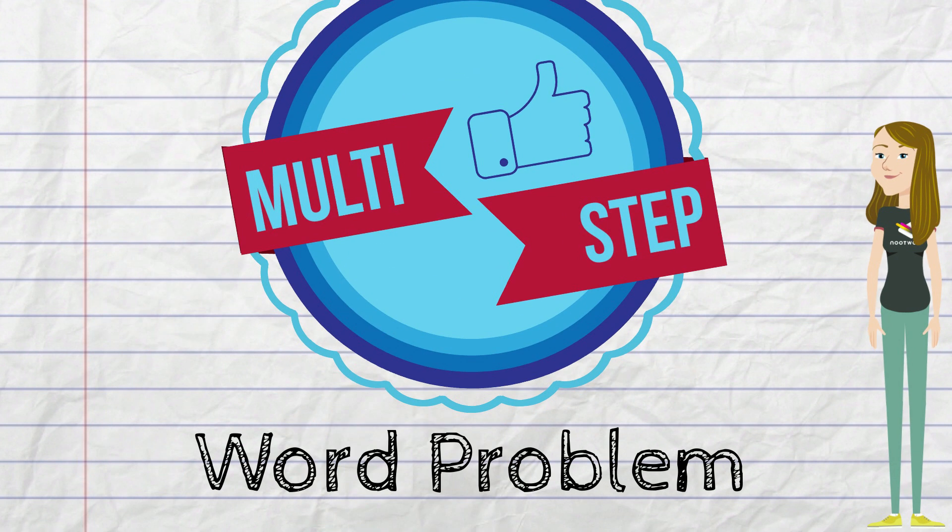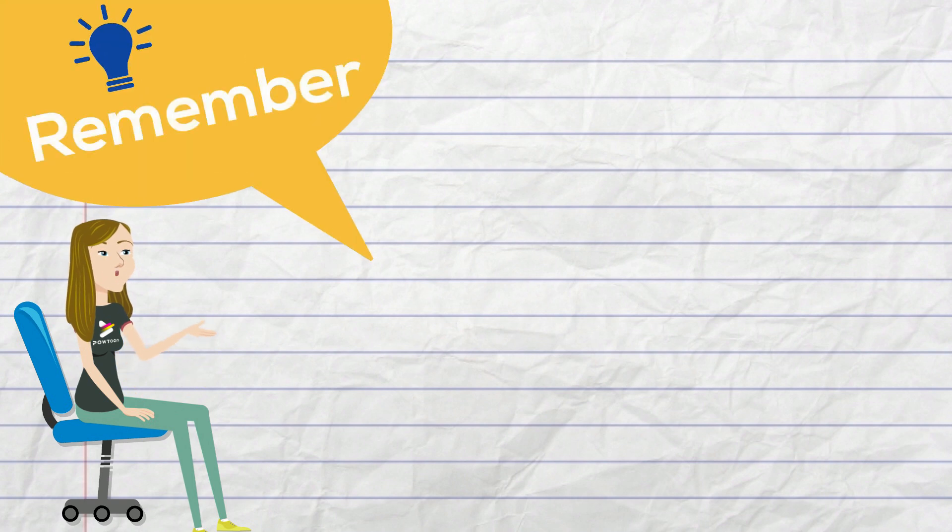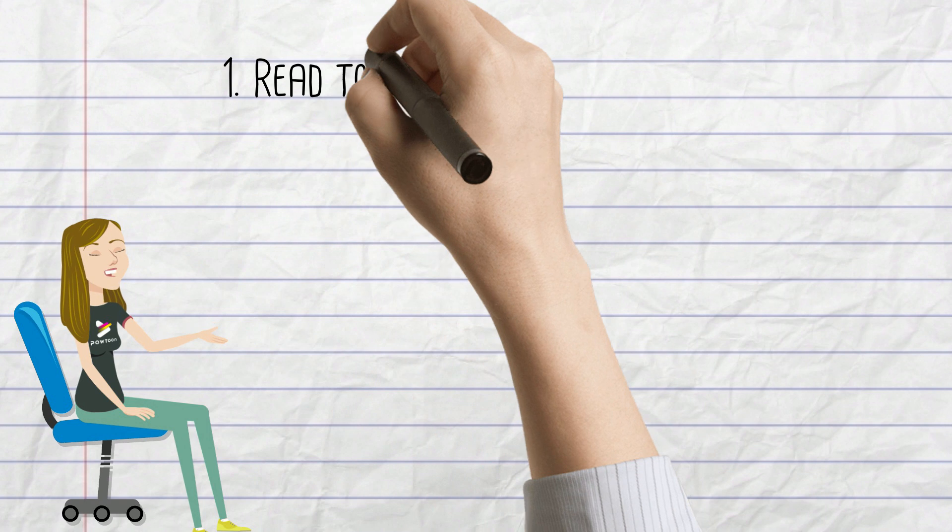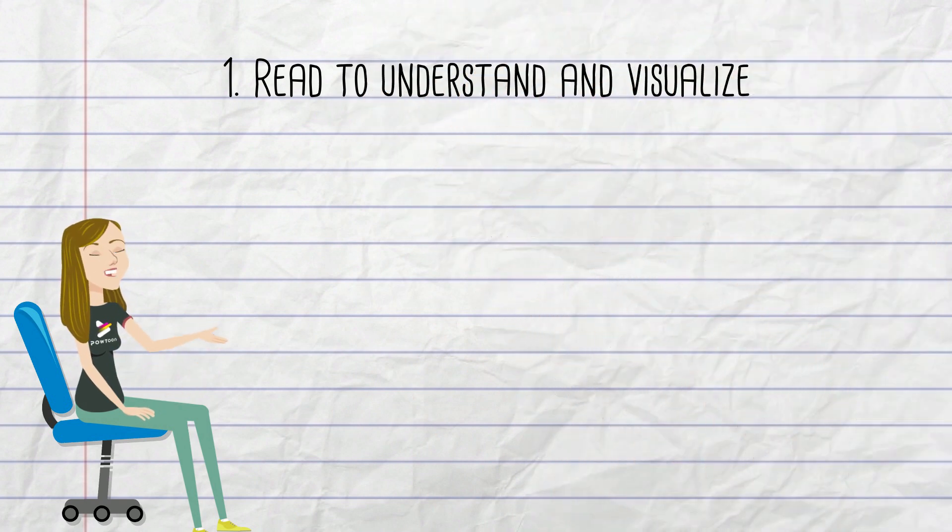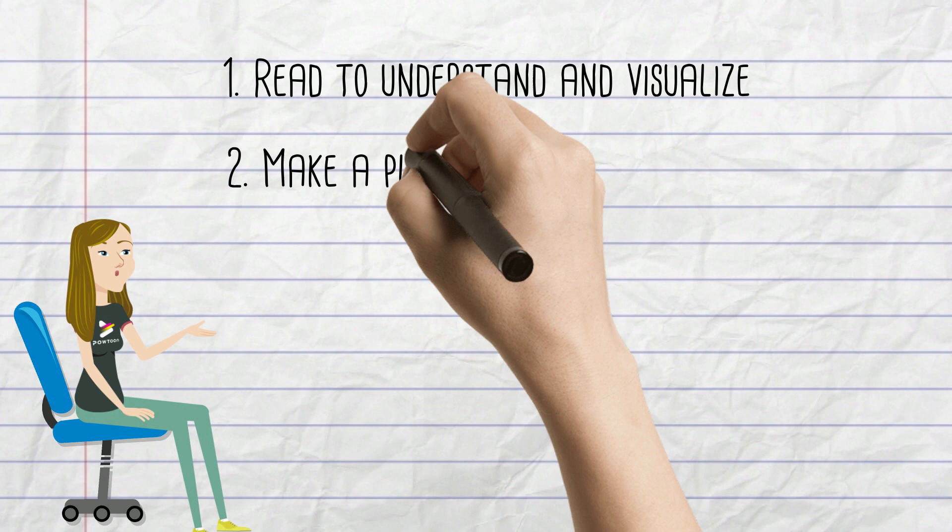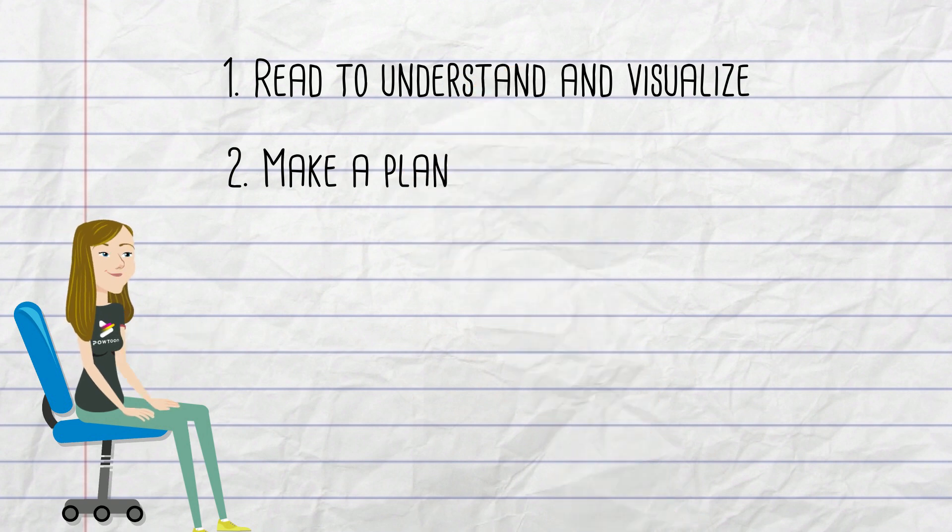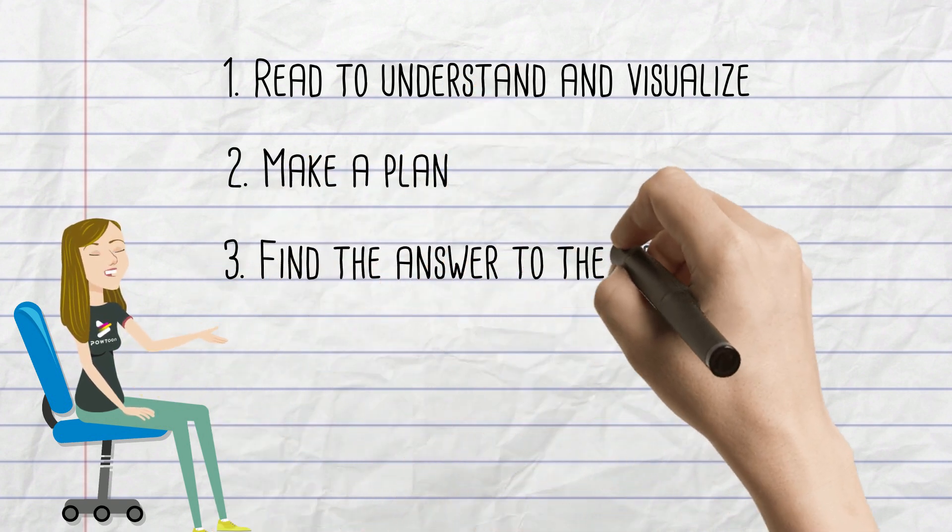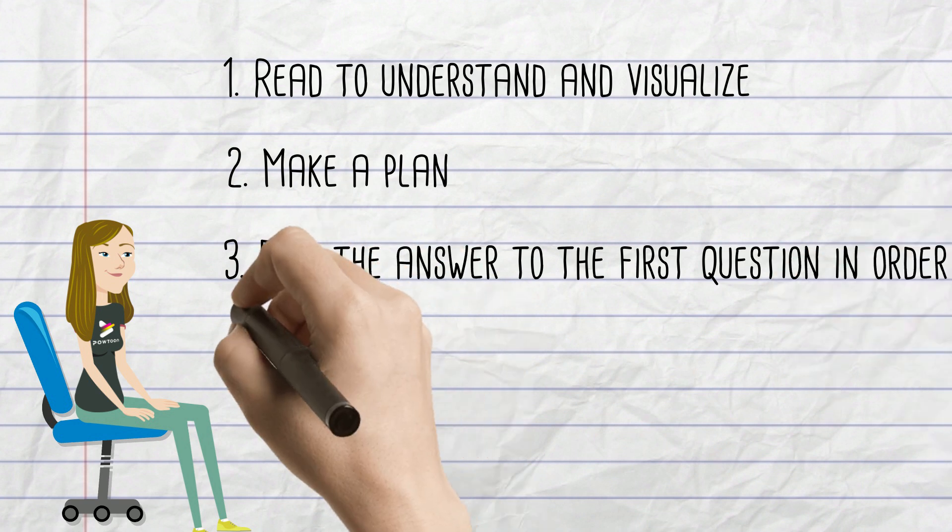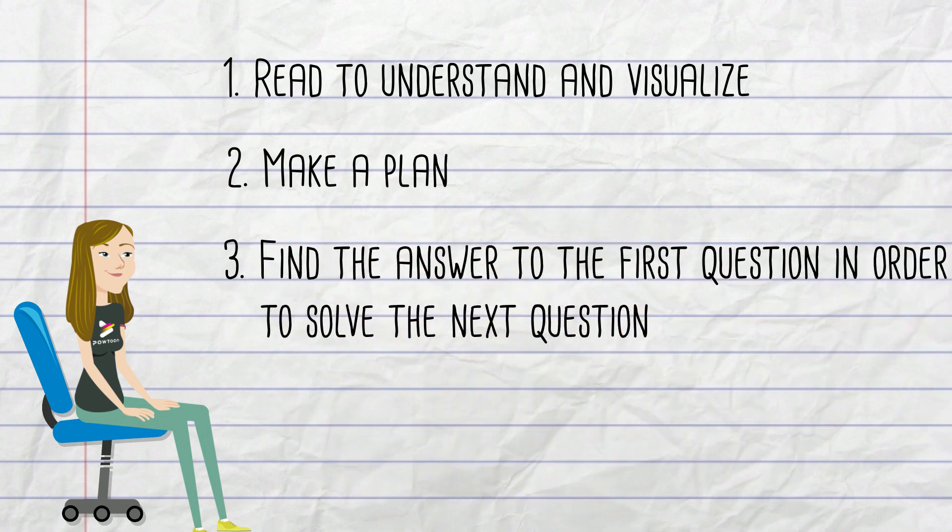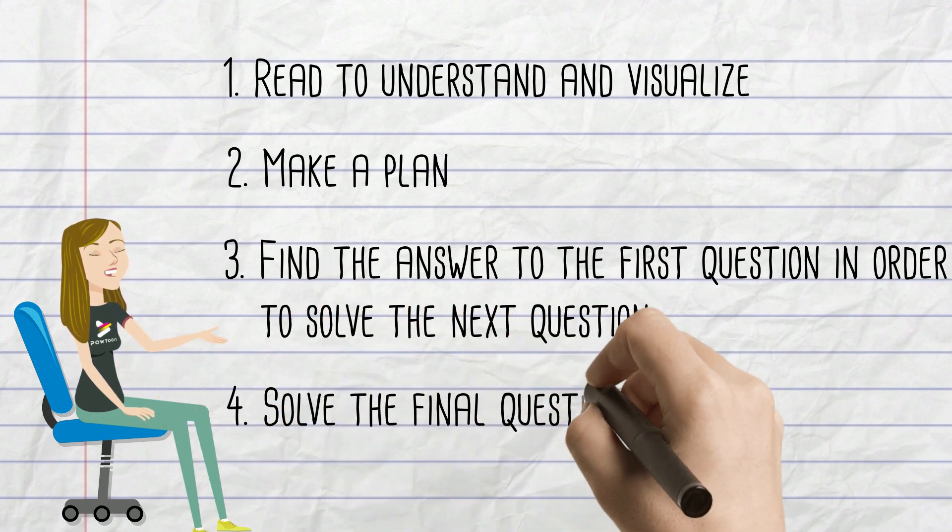Remember, when solving multi-step word problems, you must first read to understand. It is important to visualize what is happening. Next, you must make a plan. It is important to find the answer to the first question in order to solve the next question. Lastly, solve the final question and be sure to look back and check your work to make sure it makes sense.